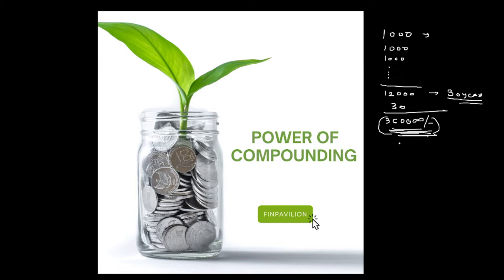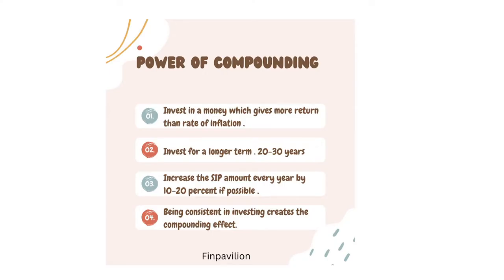But this idea of investing is very wrong, because it will not be ₹3,60,000. When you see the result of investing just ₹1,000 per month consistently, you can generate a lot of returns. This is what the power of compounding is all about.